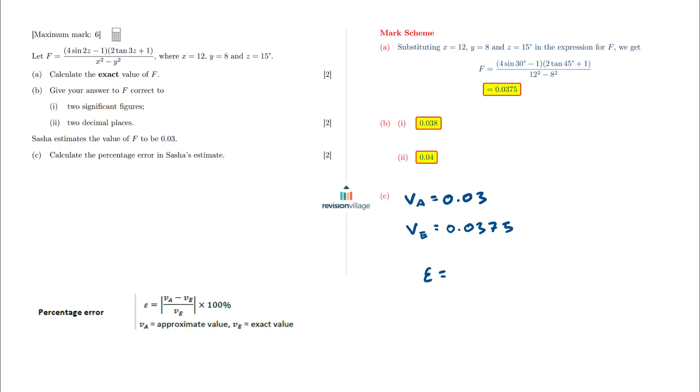We have the approximate value is 0.03, subtract the exact value 0.0375, all divided by the exact value 0.0375. And then we multiply that by 100 to turn it into a percentage.